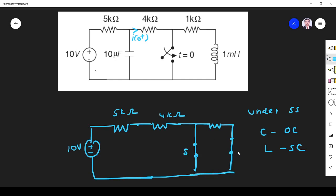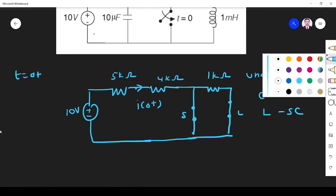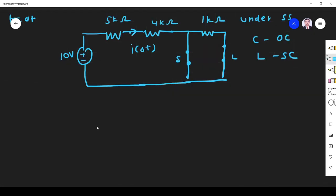Here is the switch, here it is short circuited, this is 1 kilo ohm. Now I have to find the current at t = 0+. We can see these two are in parallel, parallel with the short circuit.